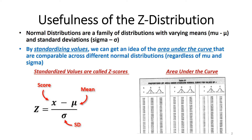One of the things that the Z distribution allows us to do, because it is a standardized distribution, is analyze what we call the area under the curve to figure out the probability or likelihood of getting certain outcomes or values. By standardizing values, we can get an idea of the area under the curve that is comparable across different normal distributions, regardless of their mean or standard deviation. This allows us to ask: do I have a rare outcome, a common outcome, or what is the likelihood of getting a value higher or lower than what I observed?